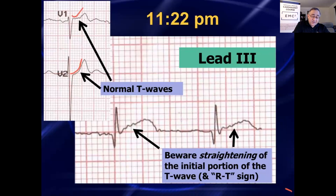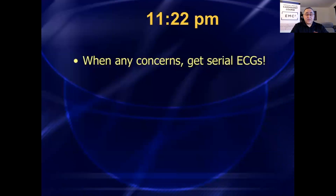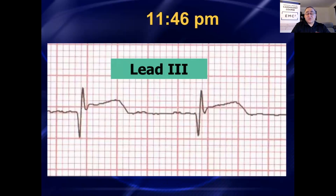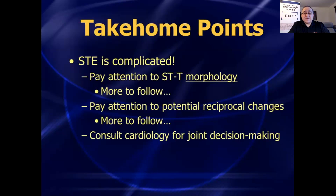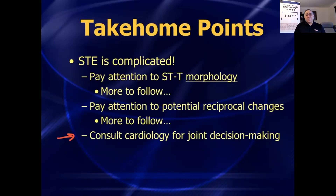Those are normal T waves — nice and concave upwards. When you see straightening, you've really got to worry. And finally, whenever you have any concerns, get serial ECGs. With the repeat ECG, Dr. Chinana was able to nail the diagnosis because it evolved. Take-home points from case number one: ST elevation is complicated — it's not as simple as just looking for one millimeter in two contiguous leads. Pay attention to the morphologies of the ST segments and to reciprocal changes. Whenever you're unsure, don't hesitate to ask cardiology or a colleague to take a look also. Joint decision-making is great in emergency medicine — it's a team sport, and if you have questions, don't hesitate to ask.